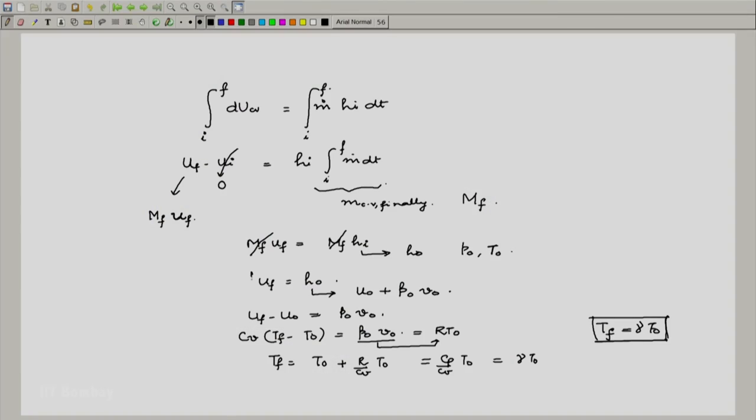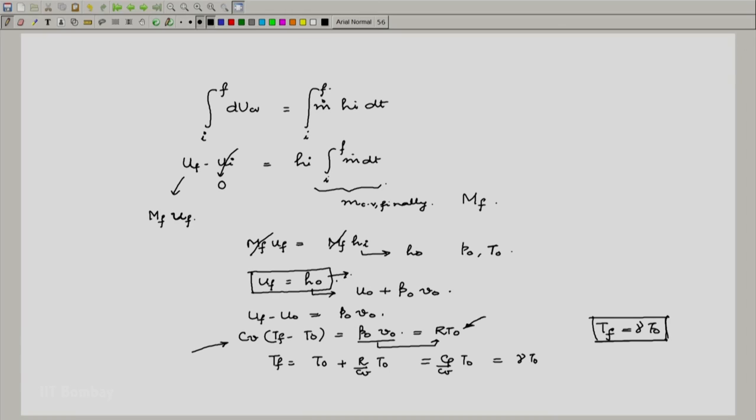So this is what we get: T final in the bottle equals gamma times T naught. The final temperature in the bottle will turn out to be gamma times the outside temperature. And one can notice that at this point we had still not assumed anything about the fluid, and here because it was air I have gone ahead and used ideal gas equations and I have assumed that cv does not change with the temperature nor does cp.